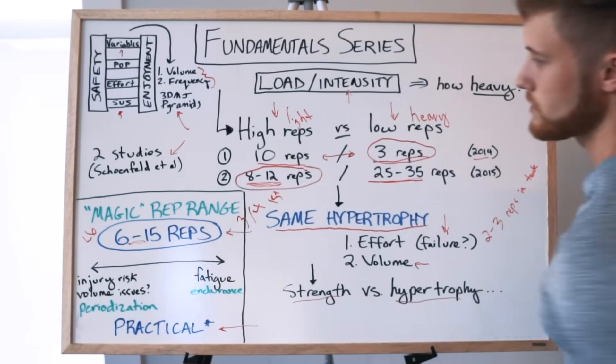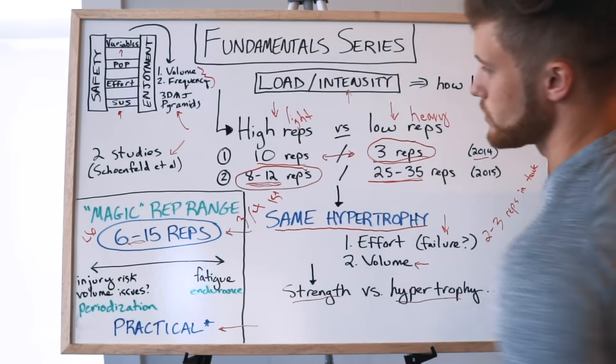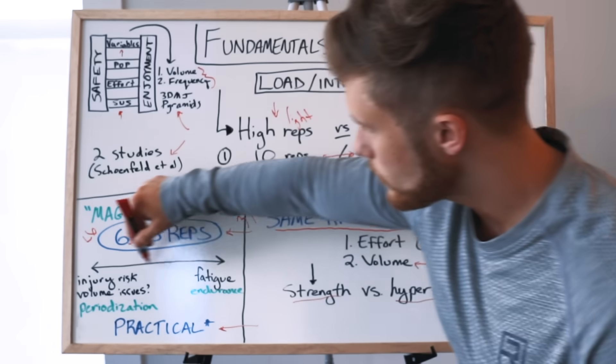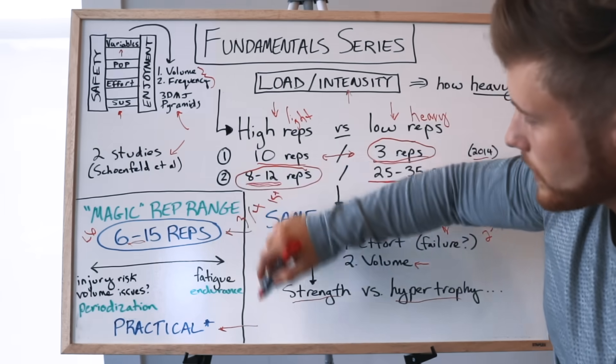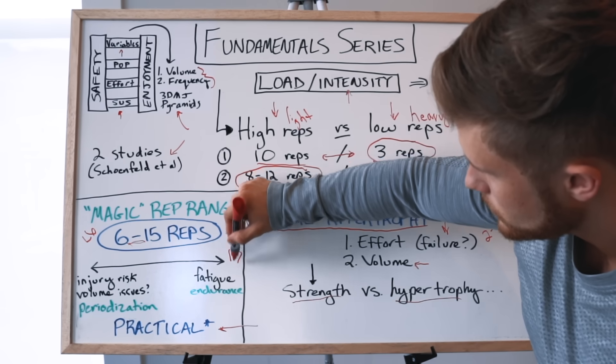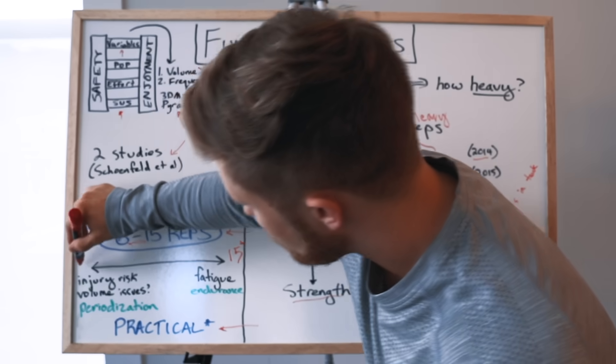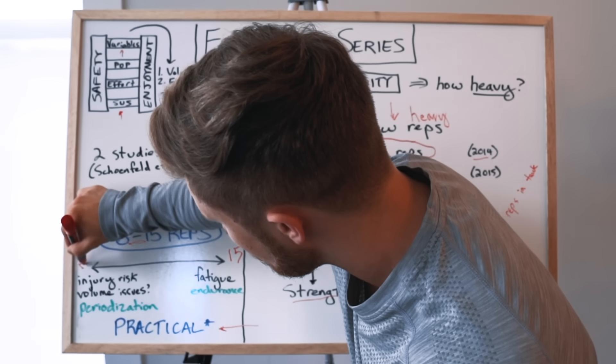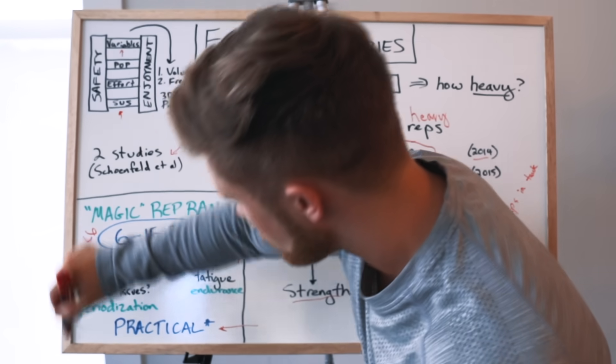That's been classified as the hypertrophy rep range, and I think that this actually holds in practice. I think that something like three-quarters of your training volume should come in this 6 to 15 rep range. You should reserve sets that have reps higher than 15 reps - so 15+ rep sets - and less than 6 rep sets for only about a quarter of your total volume, and you can split it up between these two different rep zones.